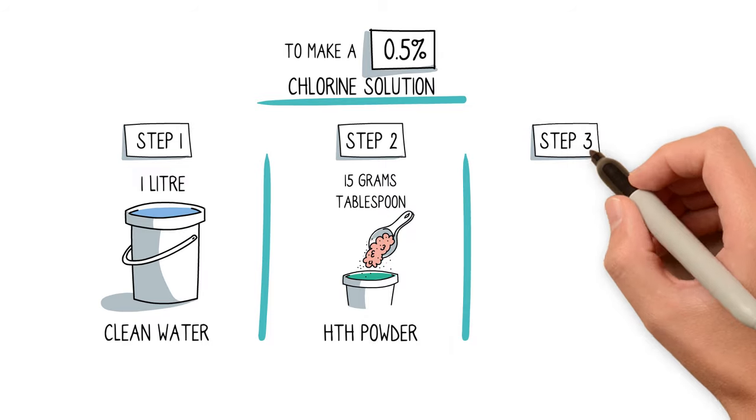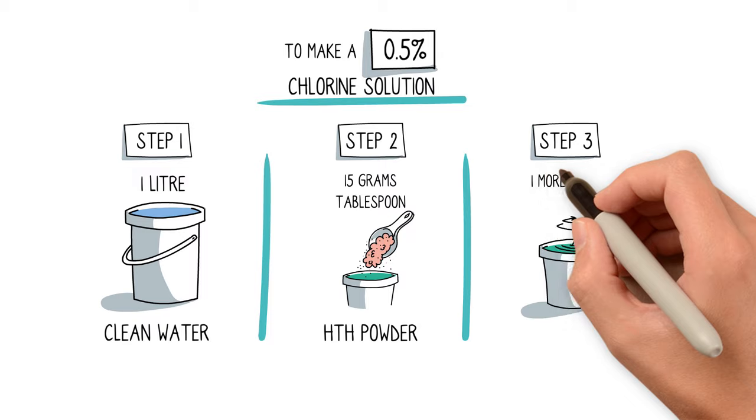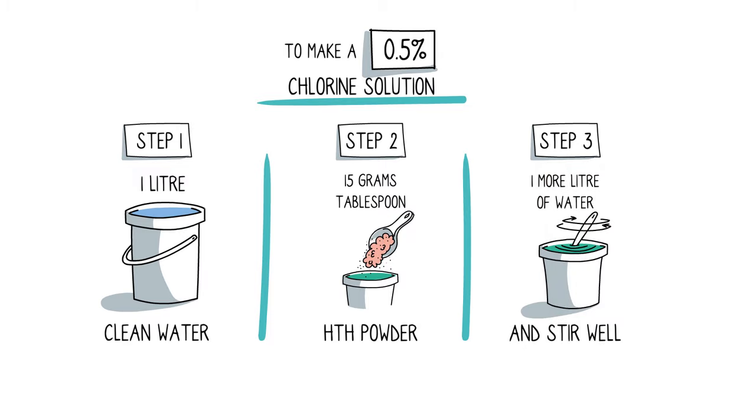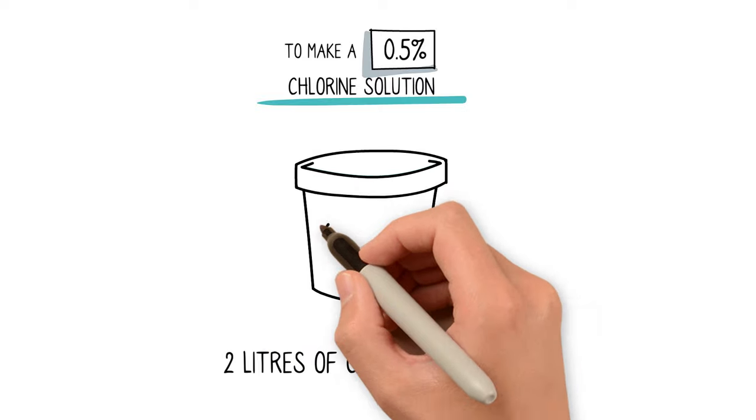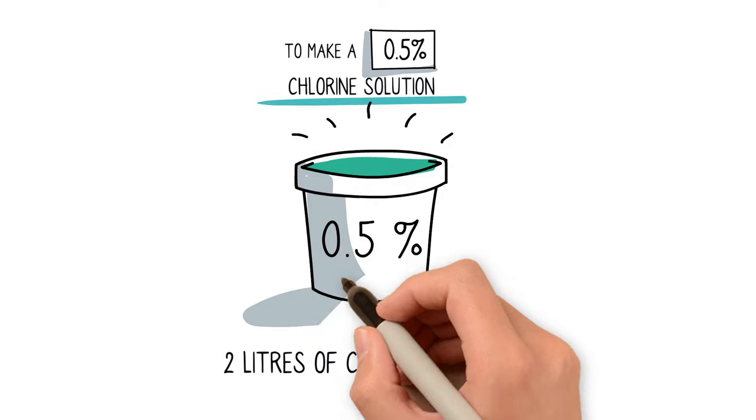Step 3. Add 1 more liter of water and stir well. You now have 2 liters cleaning solution with 0.5% active chlorine in it.